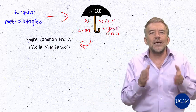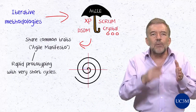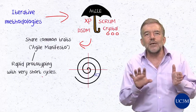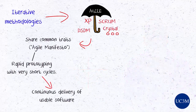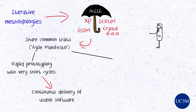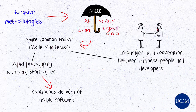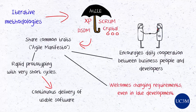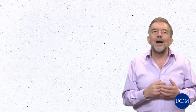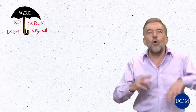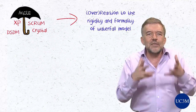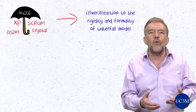Its 12 principles emphasize rapid prototyping with very short cycles, resulting in continuous delivery of usable software. Daily face-to-face cooperation between business people and developers is encouraged. In stark contrast with the waterfall model, it welcomes changing requirements even in late development. Agile software development constitutes a reaction — some would think it is an overreaction — to the rigidity and formality of the traditional waterfall model.